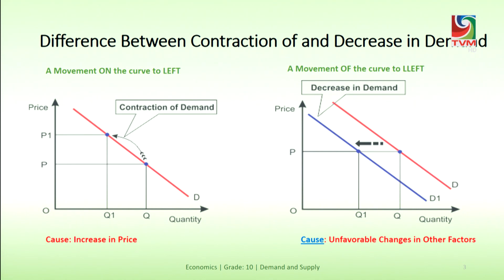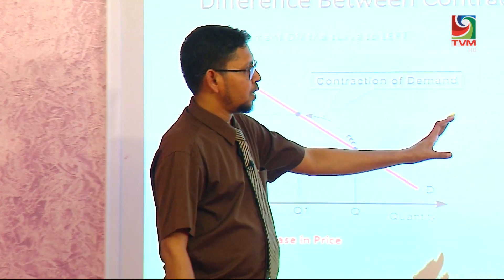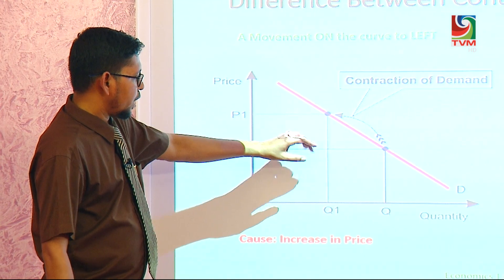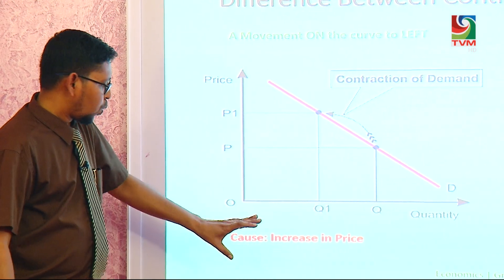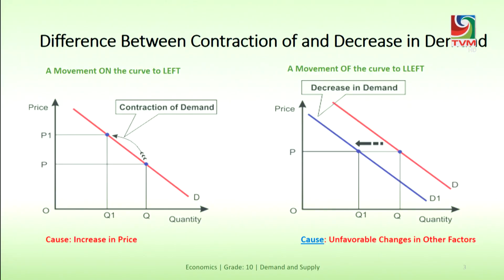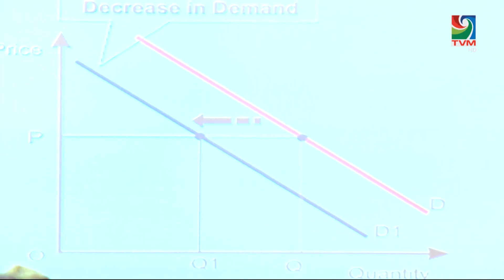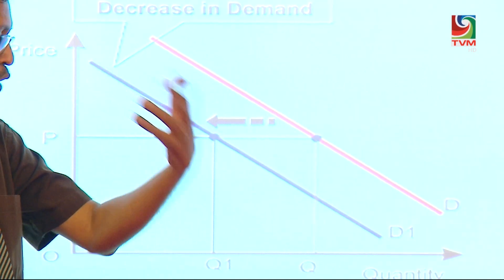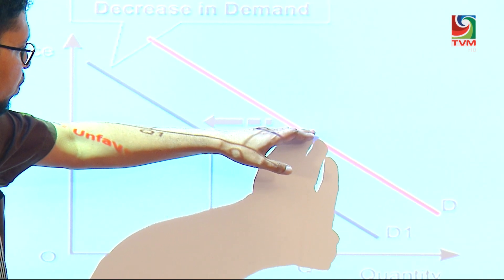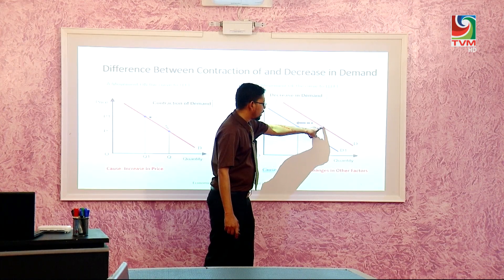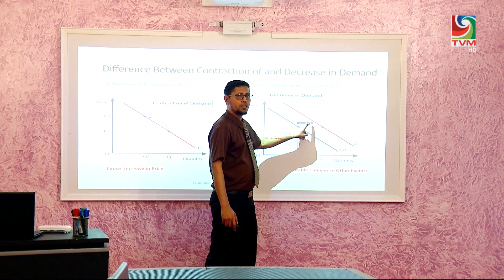Now let us see the contraction and decrease in the demand curve. The contraction occurs when the cause is only the price. Due to a price increase, the demand contracts from Q to Q1 — there is a movement along the demand curve to the left. But a decrease in demand is caused by other factors, non-price factors, and the demand curve moves from D to D1. There is a movement of the demand curve to the left.